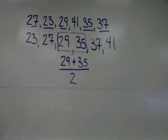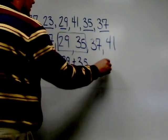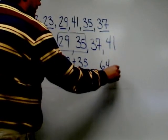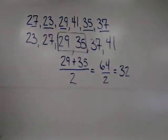35 added to 29 outputs a result of 64, and 64 divided by 2 is 32, which happens to be the median or the middle of this data set.